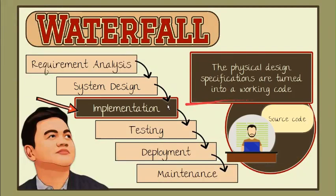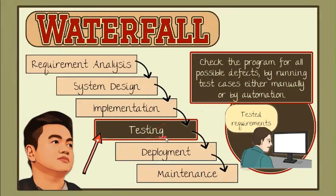Third, implementation. In this phase, the source code is written as per requirements. The physical design specifications are turned into a working code. Fourth, testing. In this phase, the code is handed over to the testing team to check the program for all possible defects, by running test cases either manually or by automation. The client is involved in the testing phase as well, in order to ensure all requirements are met.